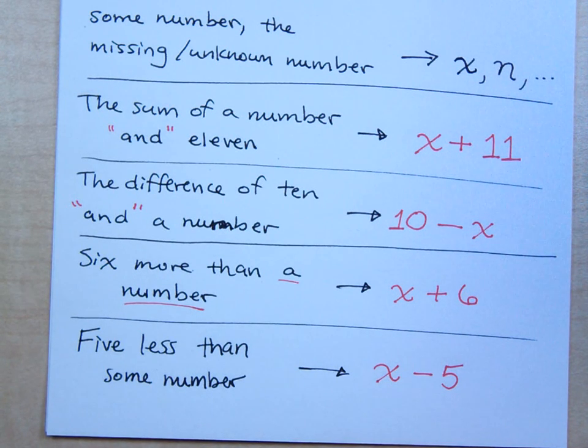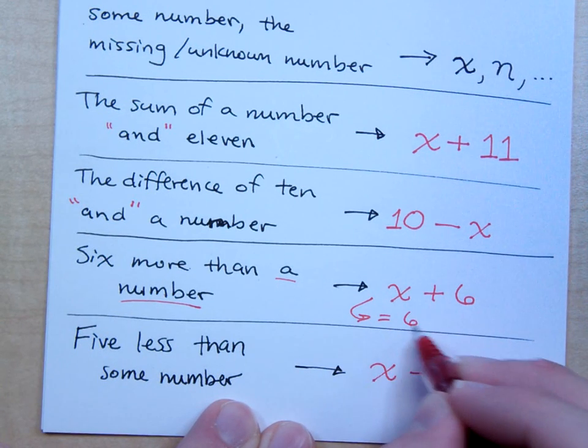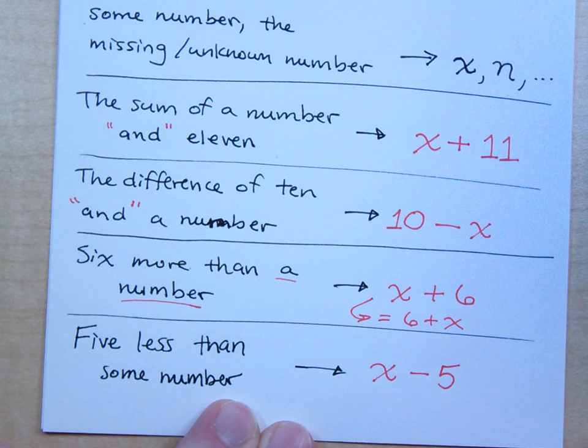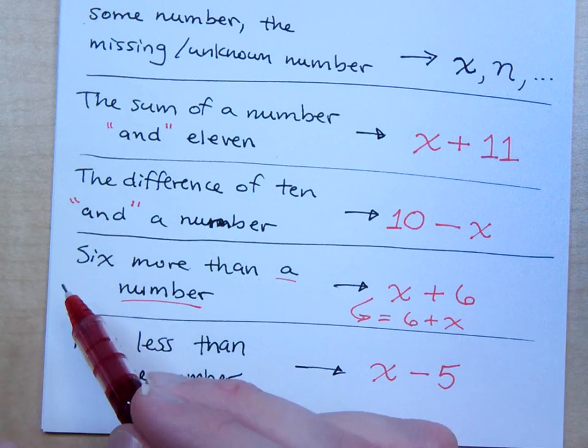Please understand that there is a commutative property for addition. Commutative property for addition says that this guy does equal six plus X. That is true. Although this is the preferred way for writing it because of the order of the words.